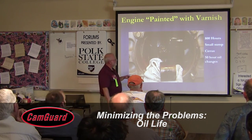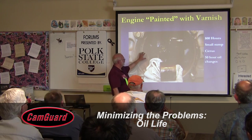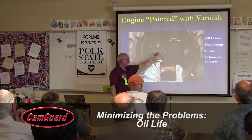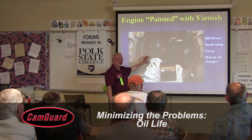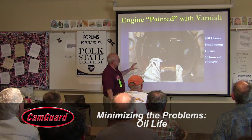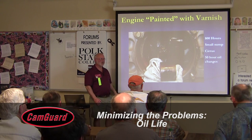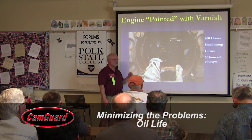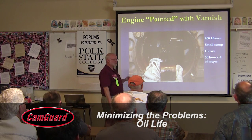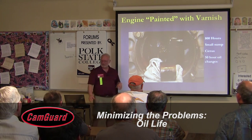Here is a Cirrus engine at 800 hours completely painted with dark amber varnish. They were doing 50-hour oil changes. This engine has a smaller-than-normal oil capacity for its size, which stresses the oil even more.